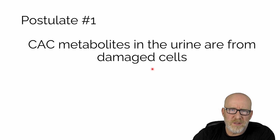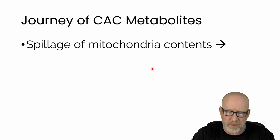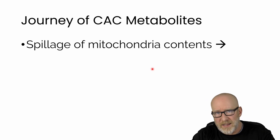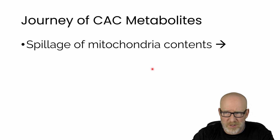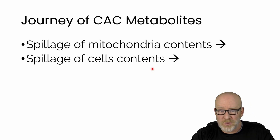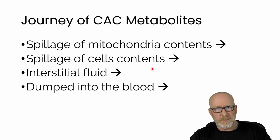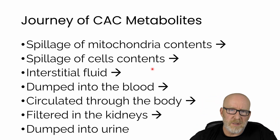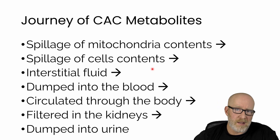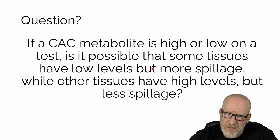Think about the journey that any one of the citric acid cycle metabolites has to go through. First, it has to get out of the mitochondria — hard, because the inner mitochondrial membrane is so impermeable. Then once it's in the intracellular fluid, it has to get past the phospholipid bilayer membrane. Then it has to get out of the cell into the interstitial fluid, get dumped into the blood, circulated throughout the body, filtered through the kidneys, and finally dumped into the urine. That's a long way for citric acid cycle metabolites to travel before making clinical determinations about them.